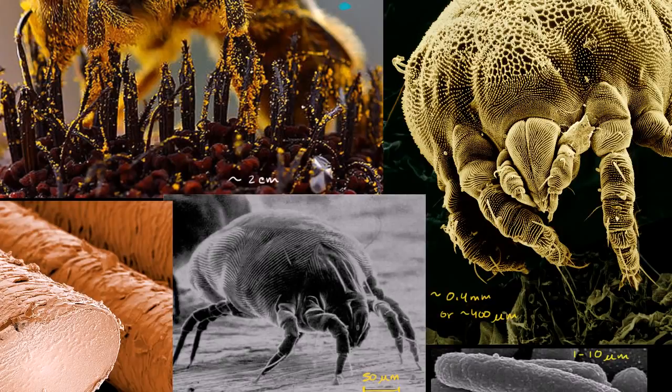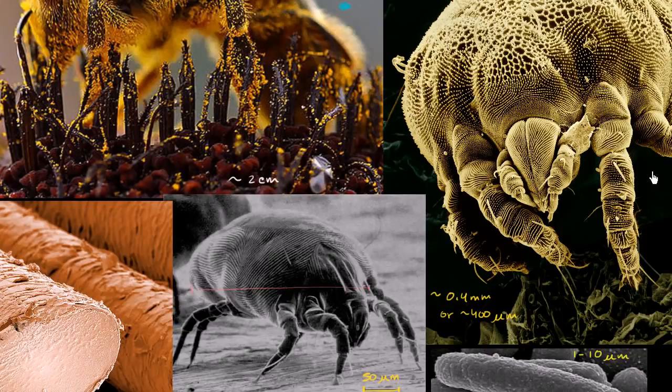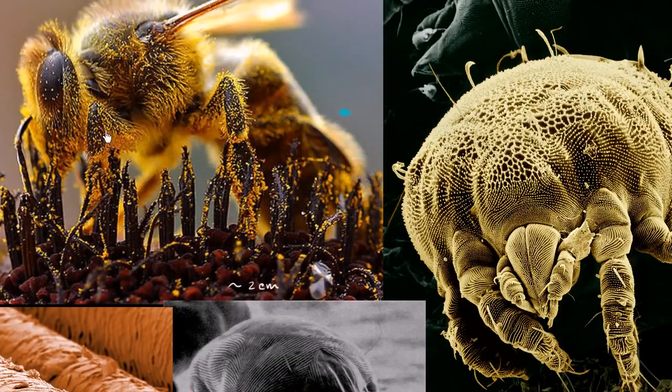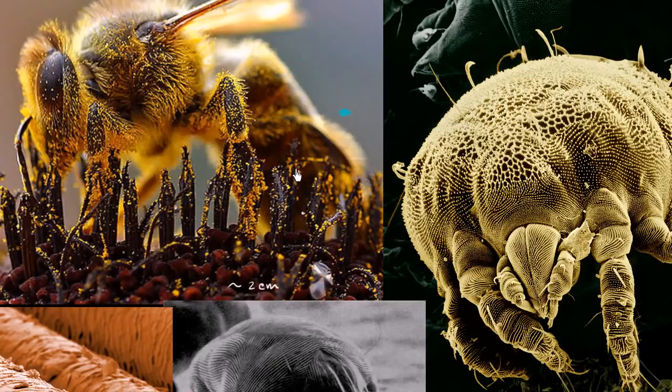We're talking about scale here. The average dust mite is less than half of a millimeter. Or if you want to talk in micrometers, it's about 400 micrometers long. So about 1 50th the length of a honeybee. Or maybe to put it in other terms that you might be familiar with...